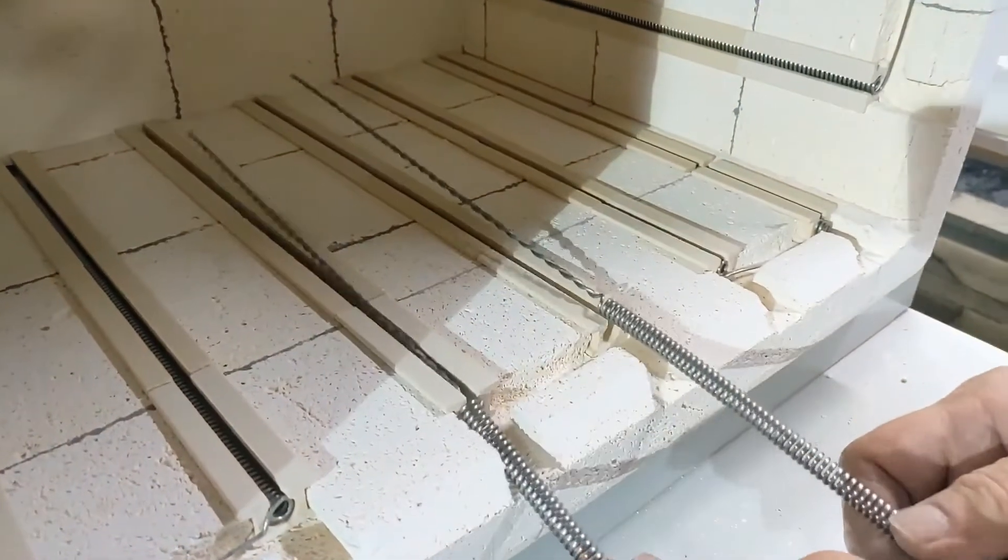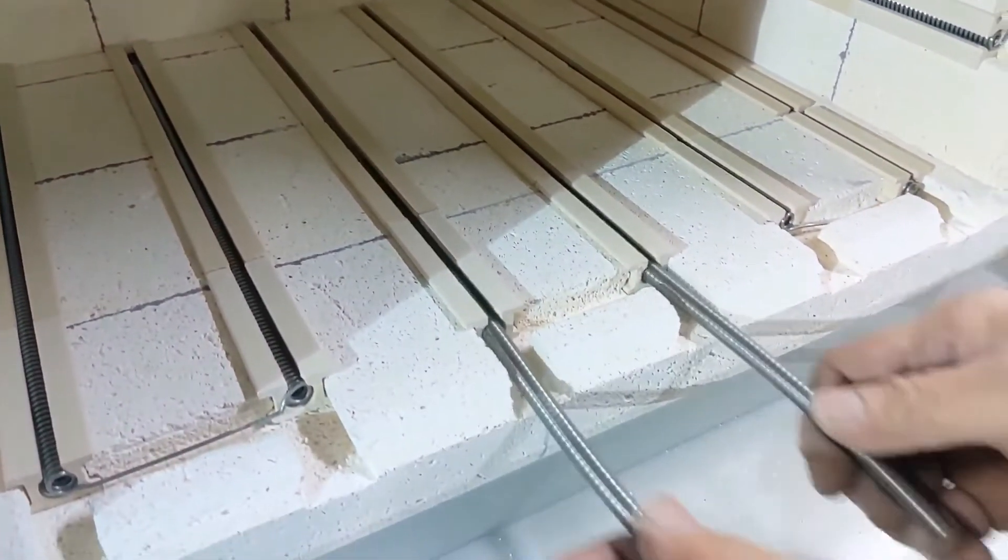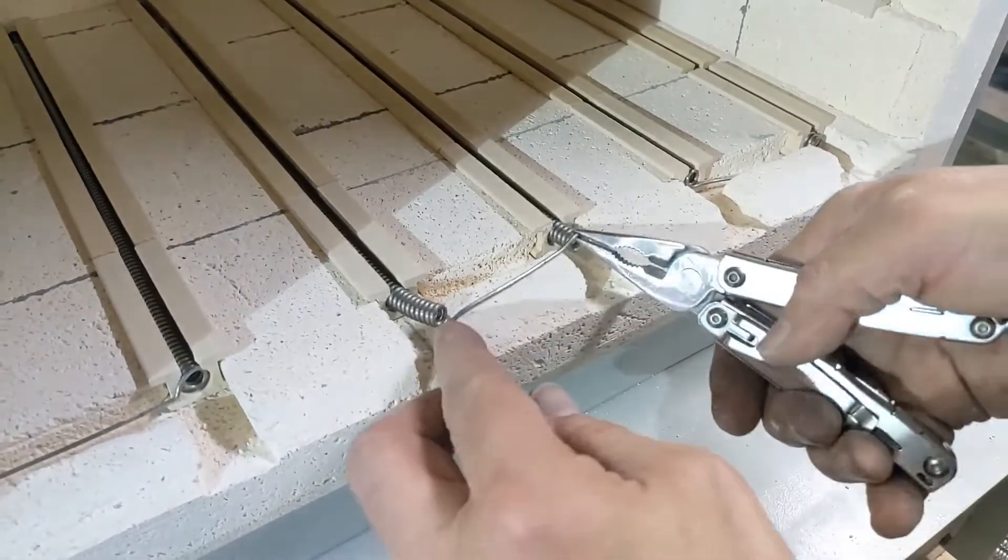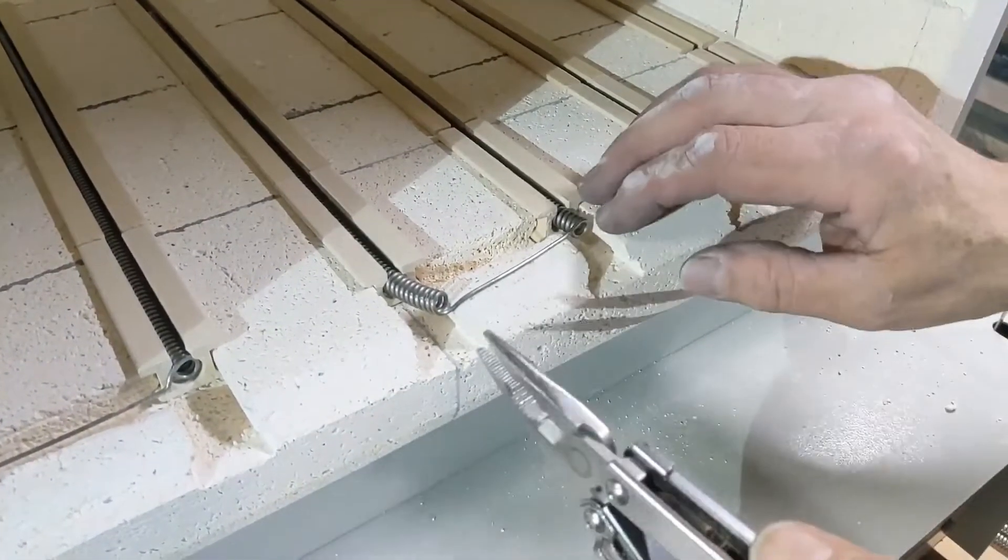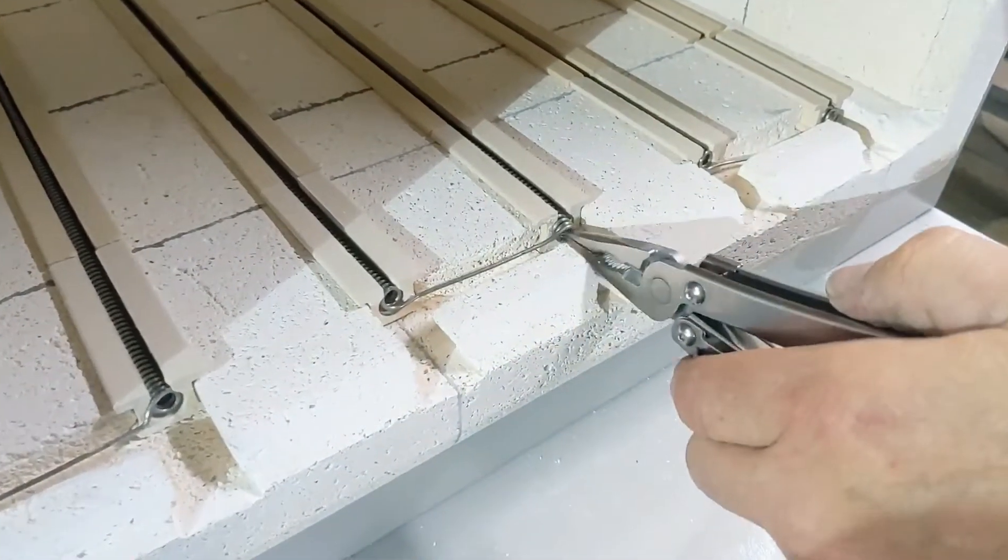With the element modified to fit, insert the heating element into the element holders until the element is just about to hit the front brick of the furnace. Again, using needle nose pliers, lift the element up over the front brick so that the element center slides into the groove.